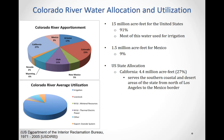The water allocation from the Colorado River is as follows: California receives 27 percent, Colorado and other states receive smaller shares, and Mexico receives only 9 percent. Overall, the U.S. receives about 91 percent and Mexico about 9 percent.